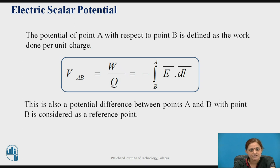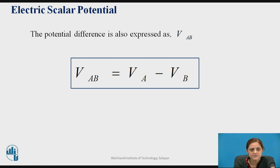Now, the potential of point A with respect to point B is defined as the work done per unit charge. Thus, VAB, the potential of point A with respect to point B, is given by the integration with limits from B to A of negative E-bar dot dl-bar. This is also the potential difference between points A and B, with point B considered as the reference point. VAB gives the difference between the two potentials, where VA is the potential at point A, VB is the potential at point B, and VAB is the potential at point A with respect to point B.